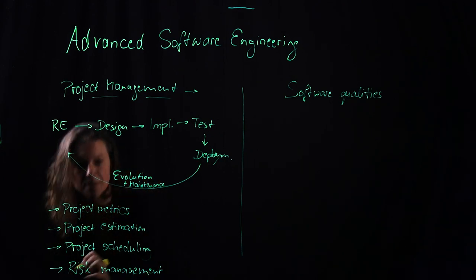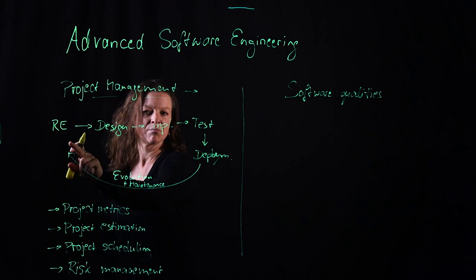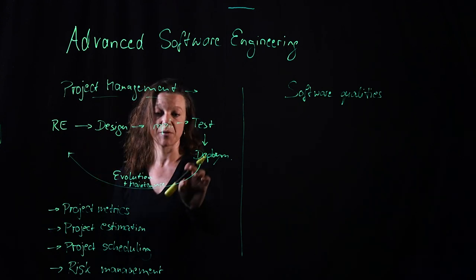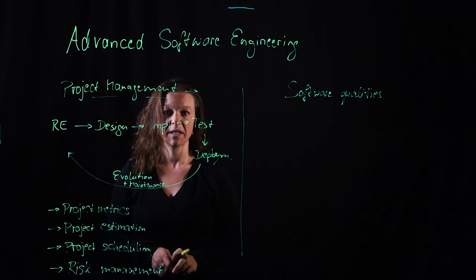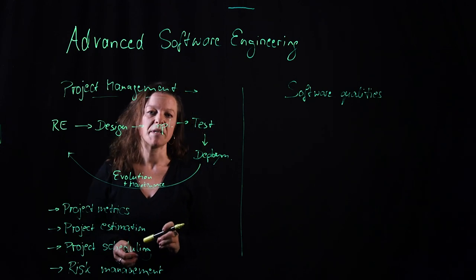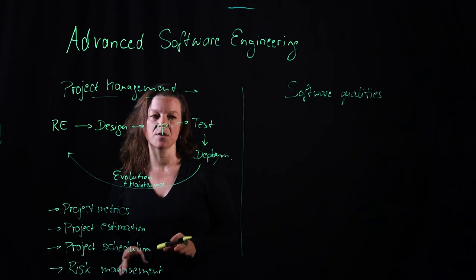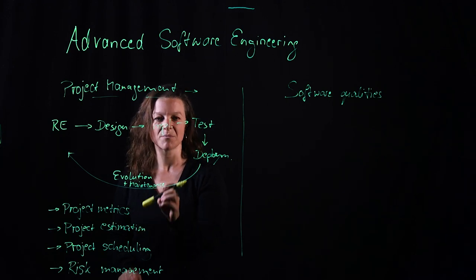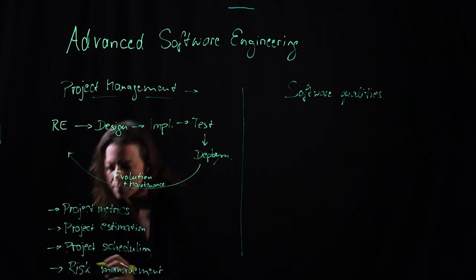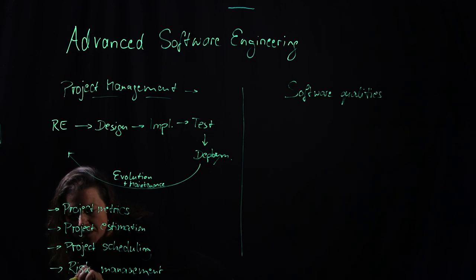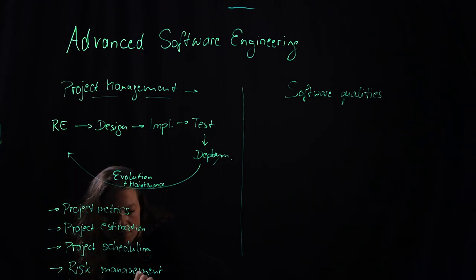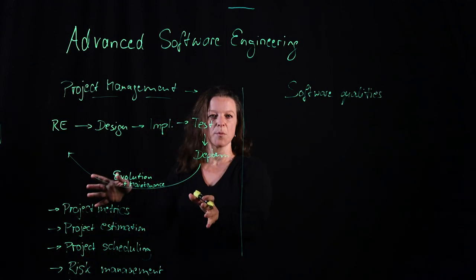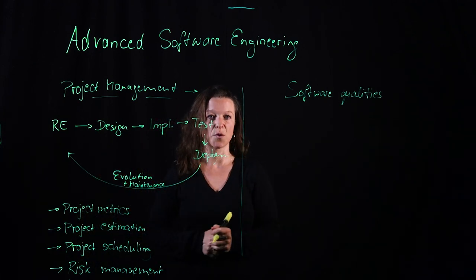And then last but not least this innocuous arrow down here that says evolution and maintenance turns out that for many software projects more than 50% of the costs go into the evolution and maintenance phase. So therefore we should take some time and look into that as well. So maintenance of software over time. That's what we're going to be doing for the first half of the course.